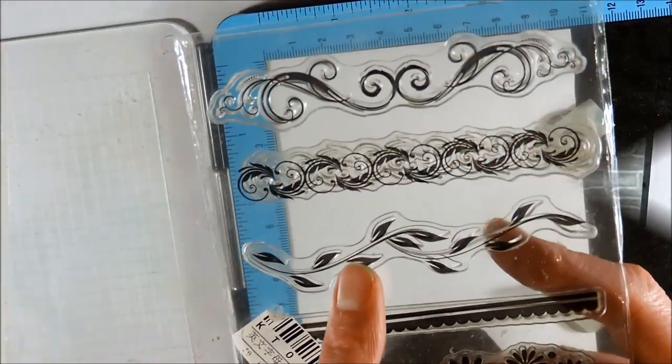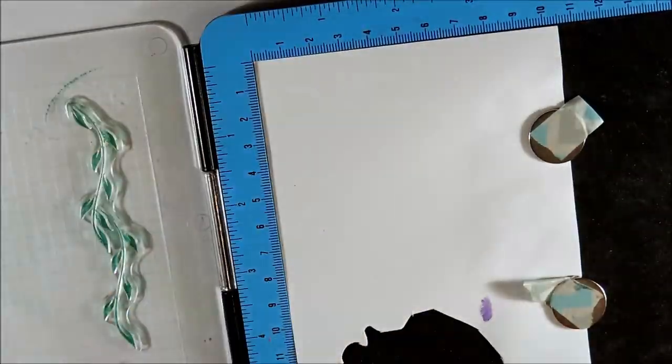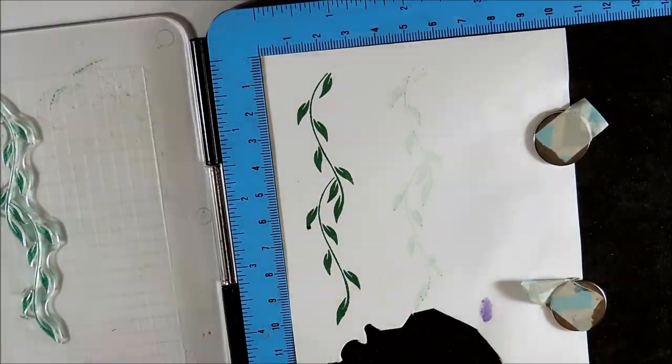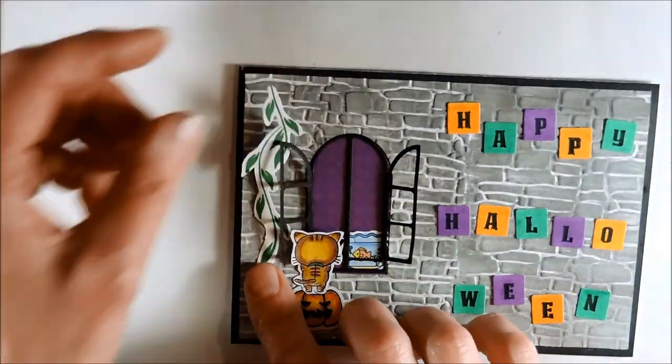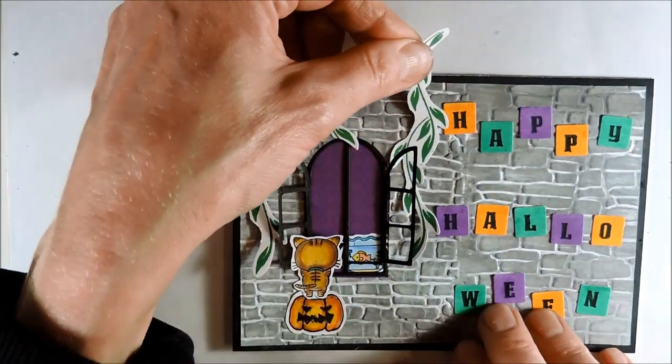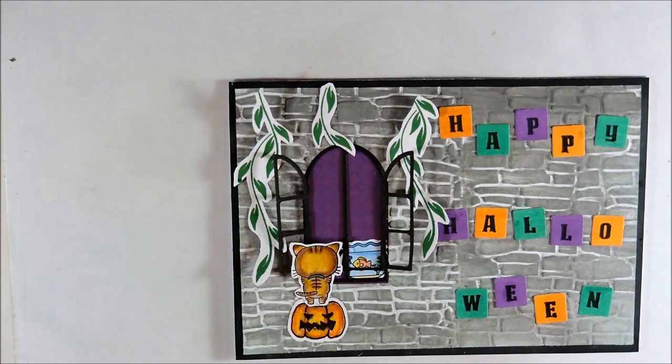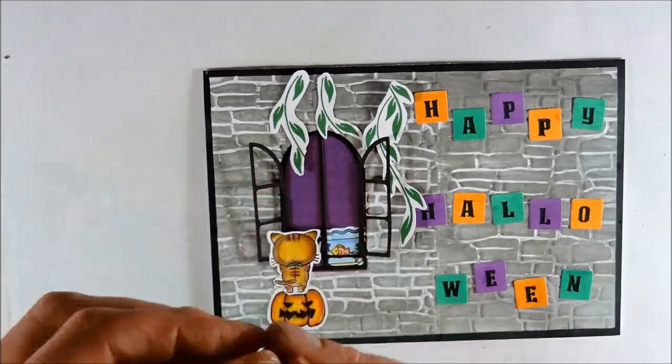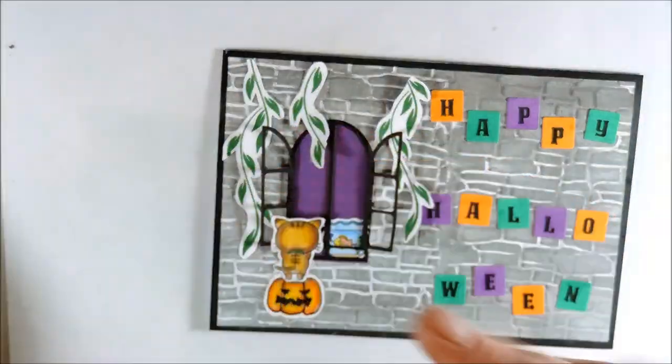To add some more interest to my card, I am stamping this leaf stamp from the border stamp set in Memento Cottage Ivy. After I have fussy cut the two stamped images, I am finding the right position and I am trimming down the two pieces into four pieces. Now I am arranging them and adhering them to my card using some wet adhesive.